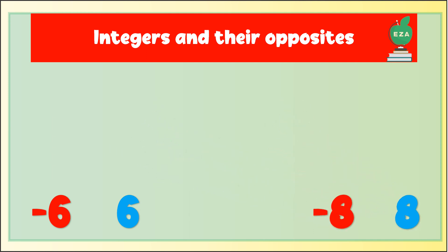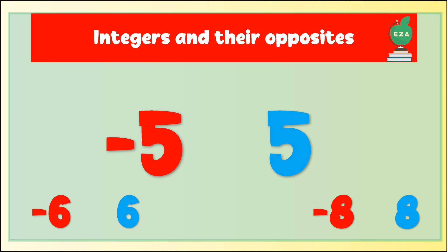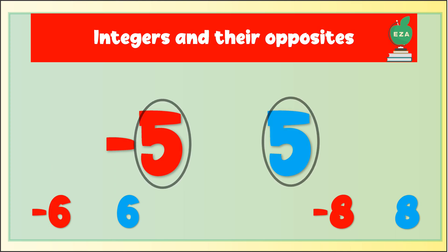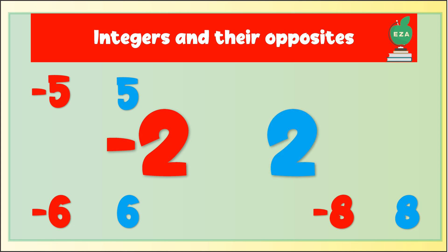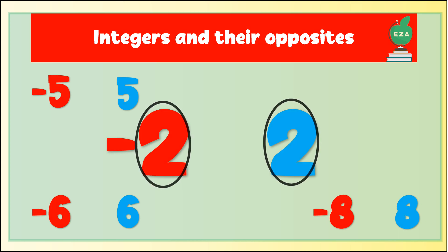Let's take a look at the number negative five. What is its opposite? If you guessed five or positive five, you guessed correct. They both have the same number five with different signs. Great job. Let's take a look at the number negative two. What is its opposite? If you guessed two or positive two, you guessed correct. They both have the same number two with different signs.